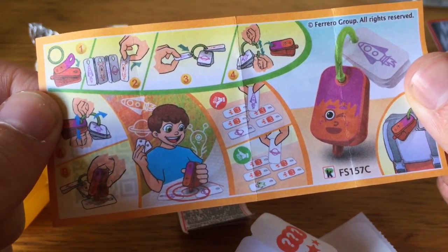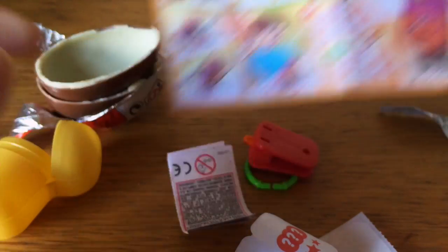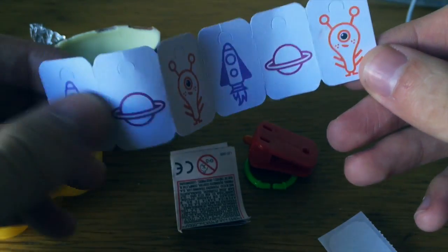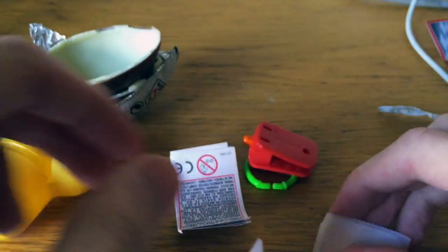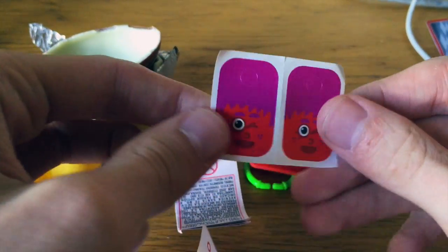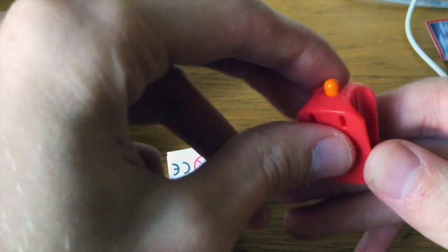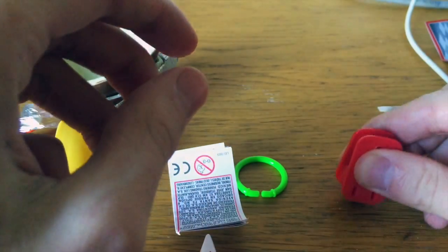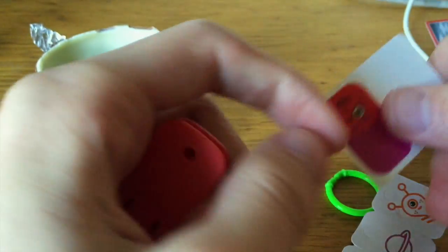I'll be honest, I'm not really sure what these instructions are trying to tell me. So there's these things with the pictures on them, and there's these stickers that I guess go onto this. What is this? Like a little strawberry buddy.